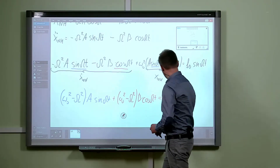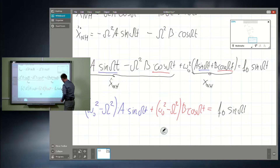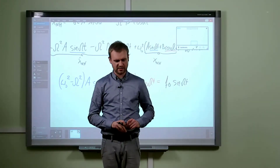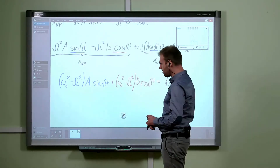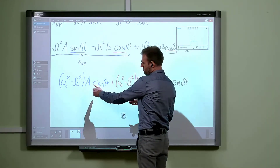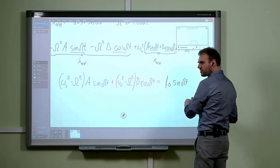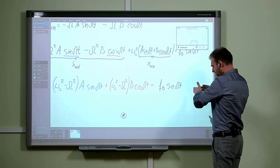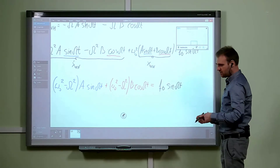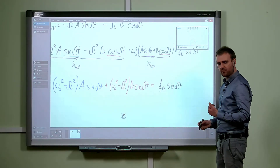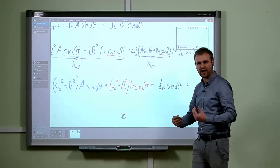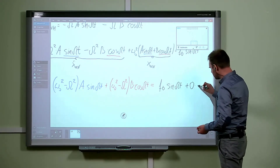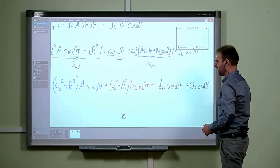The right-hand side is f₀ sine omega t. This is an identity between a linear combination of sine and cosine on the left and on the right-hand side. The cosine is not visible on the right-hand side, but we can always add zero times cosine omega t without changing the value of the equation.